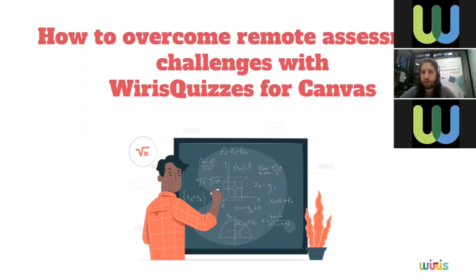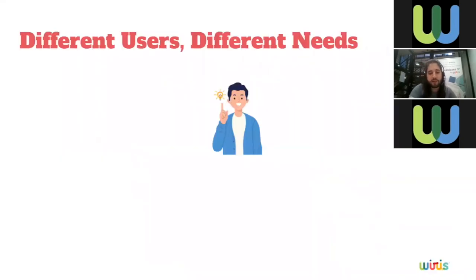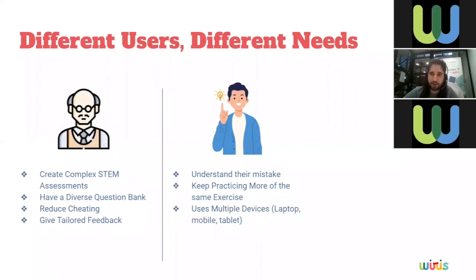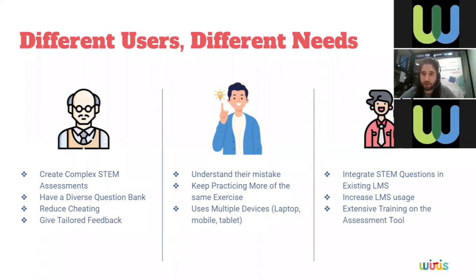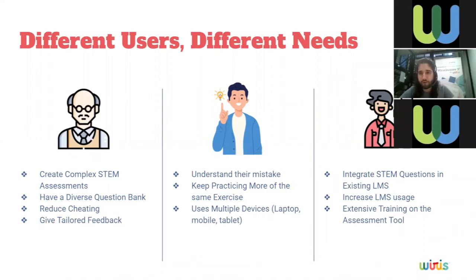We can separate the users in the whole process of having an online platform like Canvas into three types: teachers, students, and administrators of the platform. We need administrators to help make things run smoothly and correctly. We have to consider all three types of users in the online ecosystem and their different needs, because they all have different needs when it comes to providing a good assessment tool, and all of them are important.